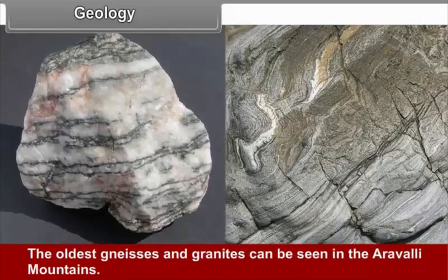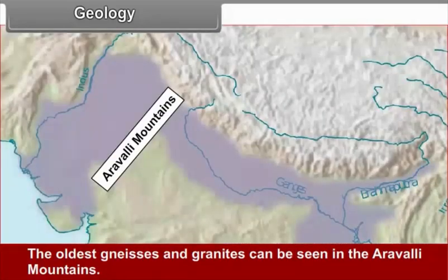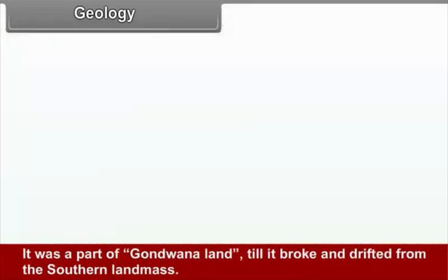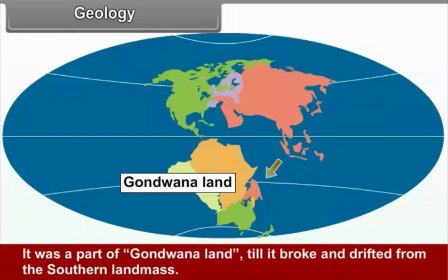The oldest gneisses and granites can be seen in the Aravalli Mountains. It was a part of Gondwana land until it broke and drifted from the southern landmasses.